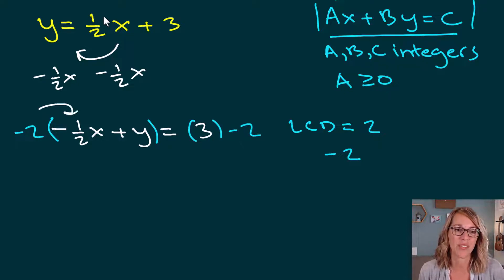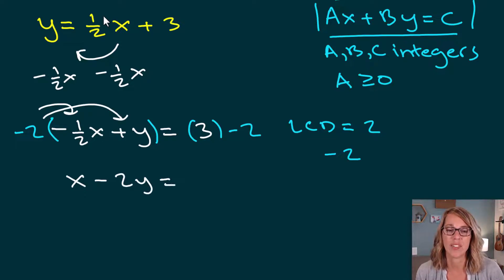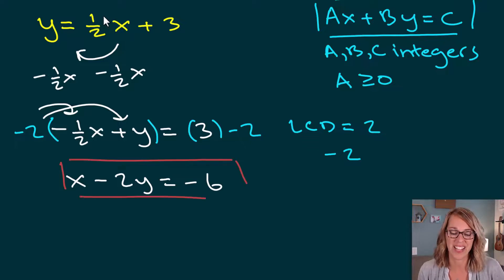Let's go ahead and bring this through. So negative 2 times negative 1 half, those cancel. And I end up with just my x. And then negative 2 times y is going to be negative 2y is equal to 3 times negative 2, which is equal to negative 6. And I've got that equation in standard form.